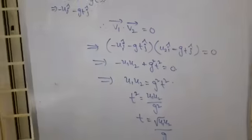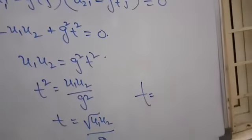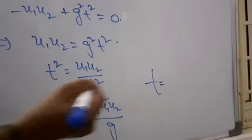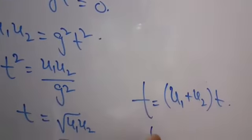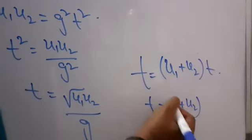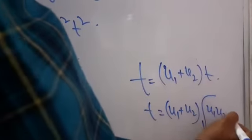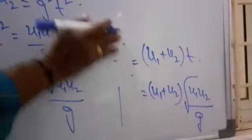Next, when displacements are perpendicular, the final expression for the horizontal displacement is (U1 + U2) into time of flight, giving (U1 + U2) into √(U1·U2) / G.